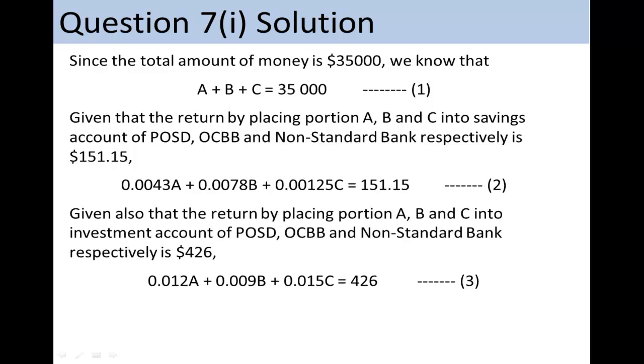The third equation, given also that the return by placing portion A, B, and C into investment account of POSD, OCBB, and non-standard bank, respectively, is $426.